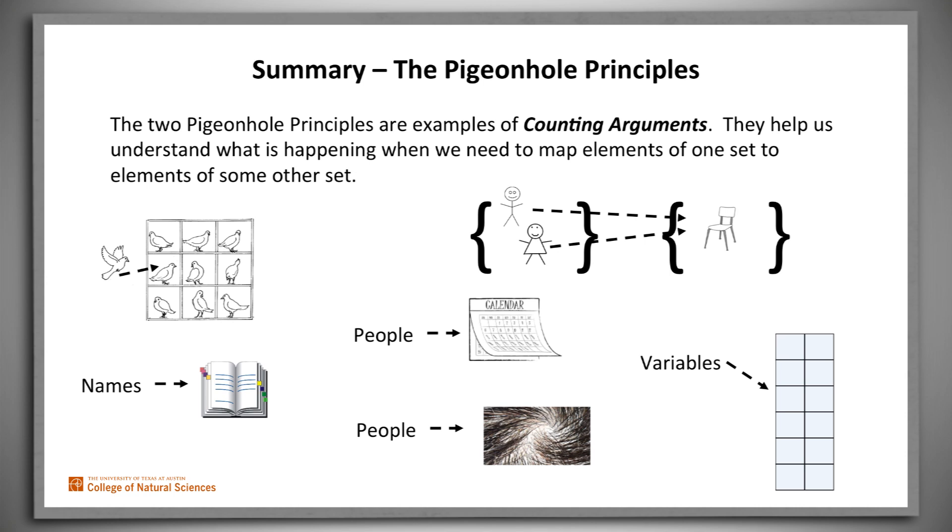We can summarize by saying that the two pigeonhole principles are examples of counting arguments. They help us understand what's happening when we need to map elements from one set to another set.